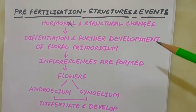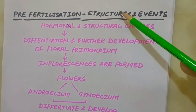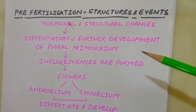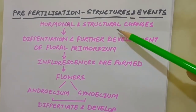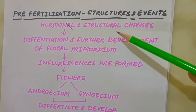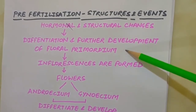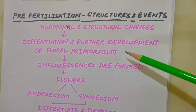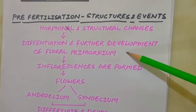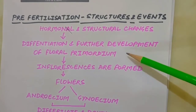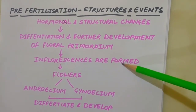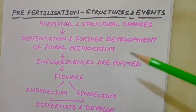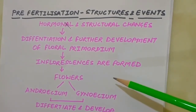Now we are coming to the next topic: pre-fertilization structure and events. Before fertilization, a series of events occur in the flower. The story begins with several hormonal and structural changes which lead to differentiation and further development of floral primordium. Floral primordium is a group of cells or tissue which give rise to the flower. Then inflorescences are formed — meaning the modified part of the shoot where flowers are formed — leading to floral buds and then flowers.